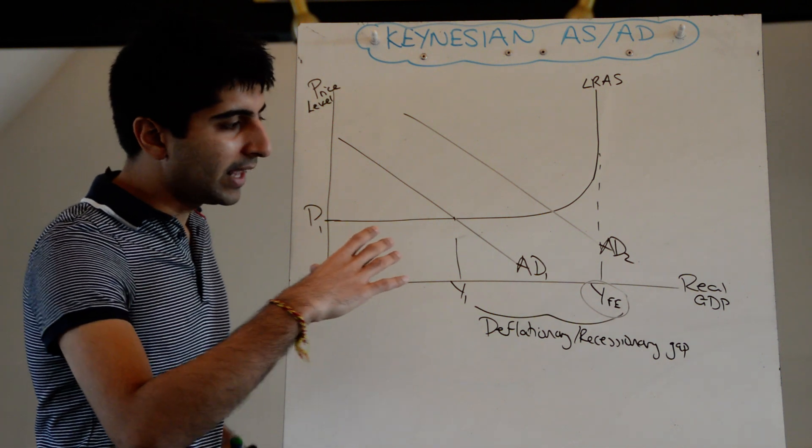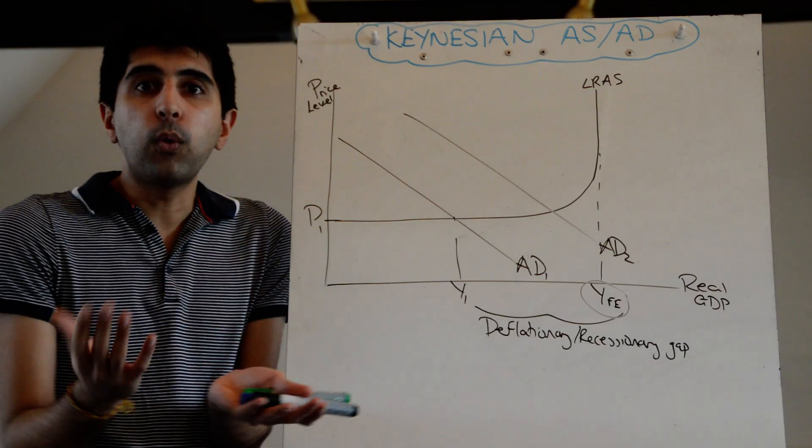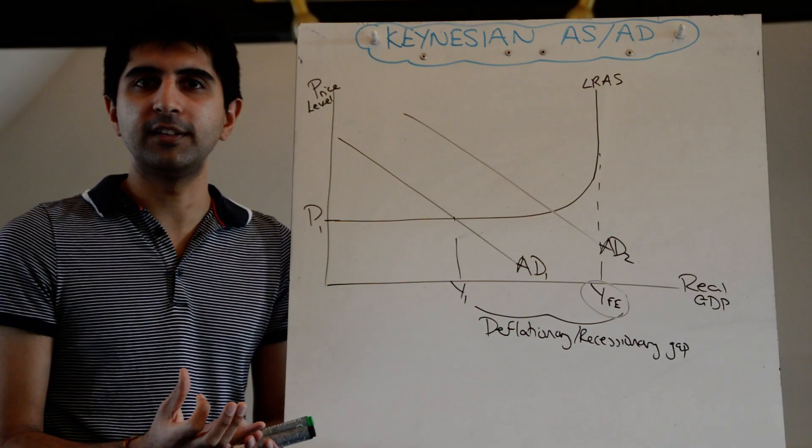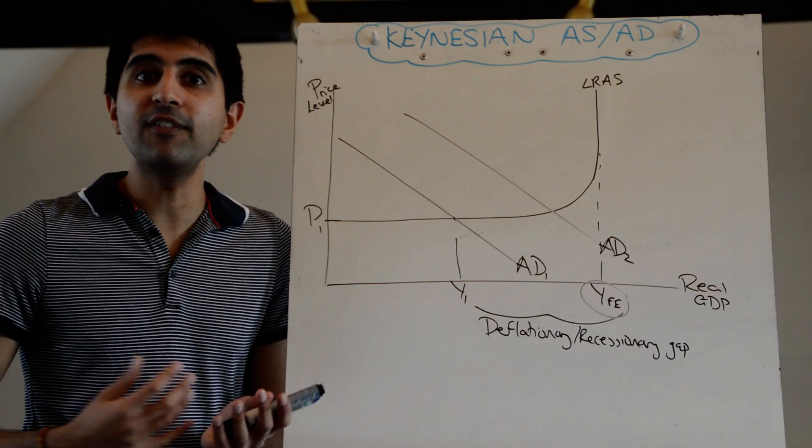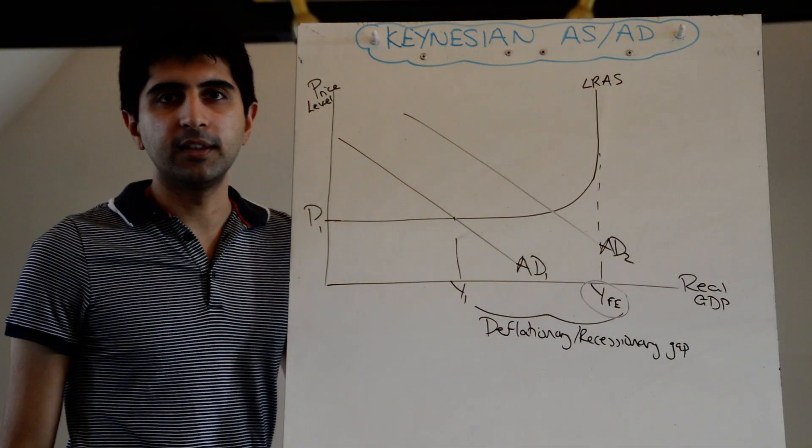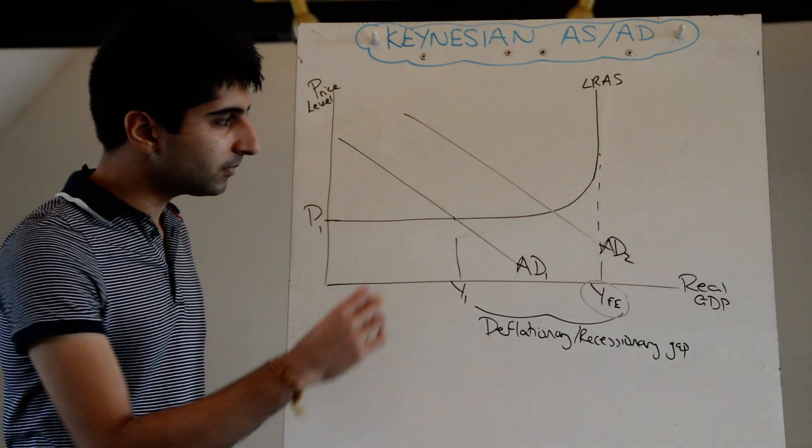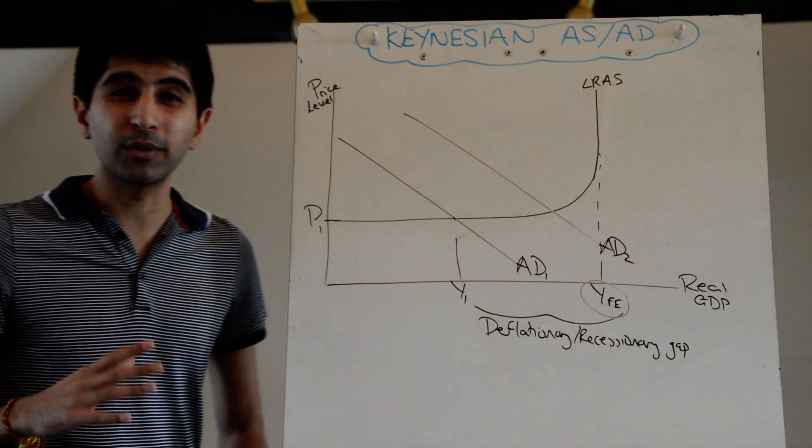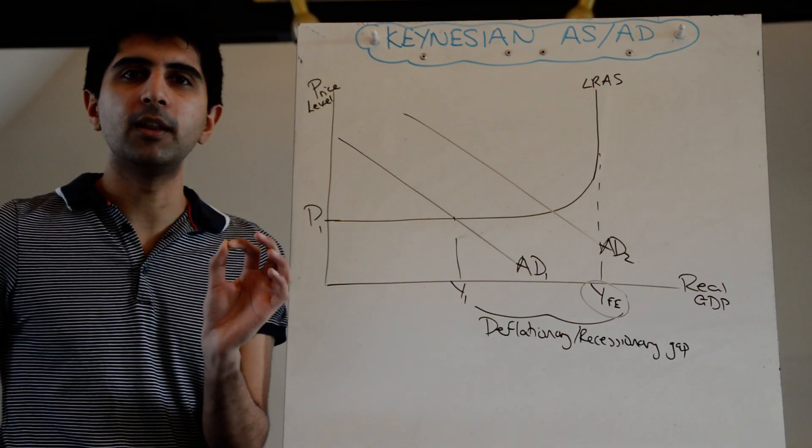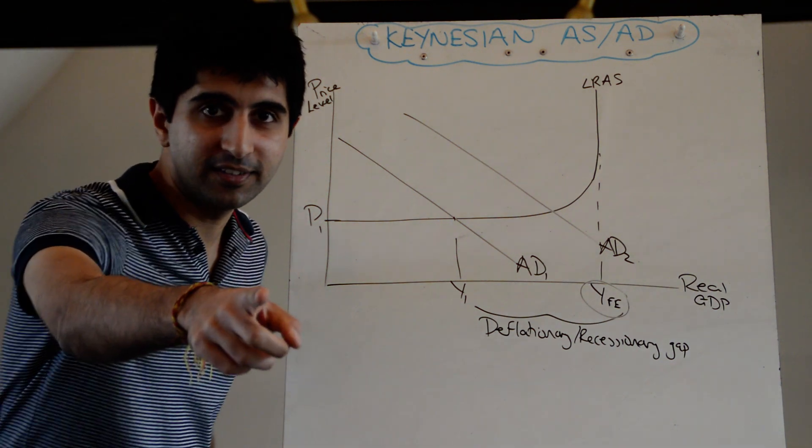It takes away the major limitation of the classical model, which is when does the long run occur? There's no time frame put on when wages become variable. The Keynesian model takes away that limitation so the economy can move directly towards full employment levels of output. That's the Keynesian model, taking away the major limitations and the assumption of wages becoming variable in the long term. Hope that makes sense, thanks for watching.